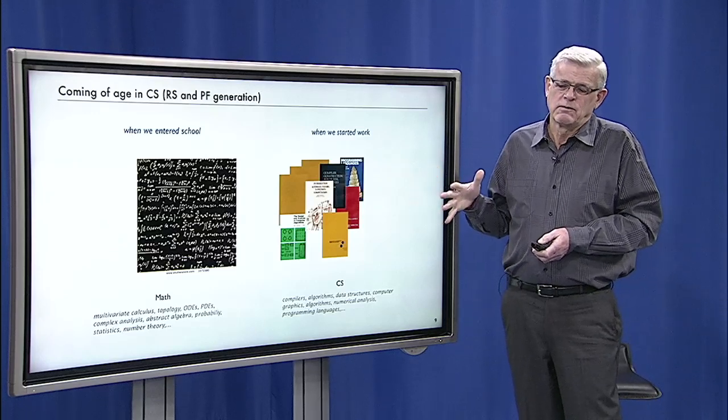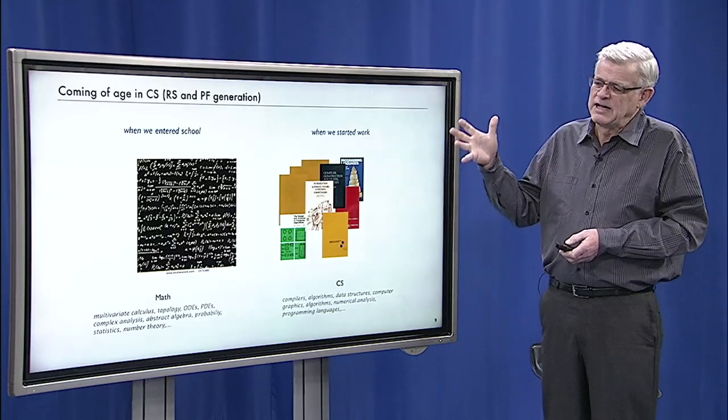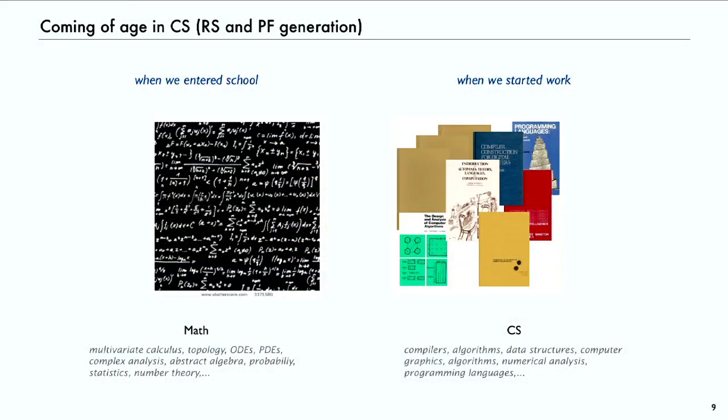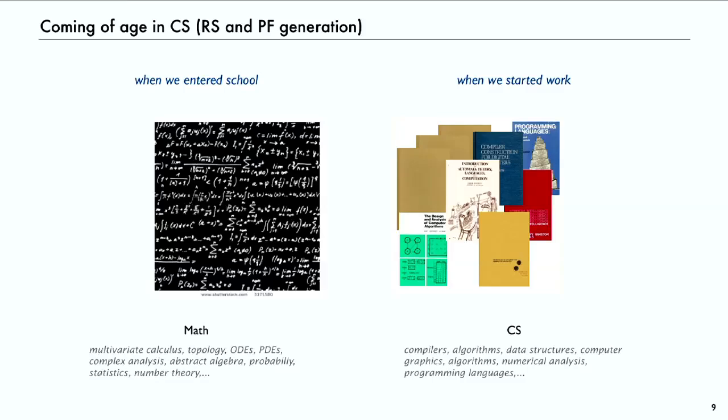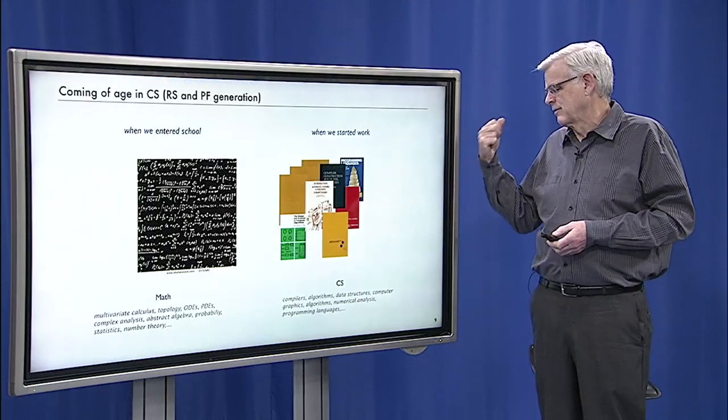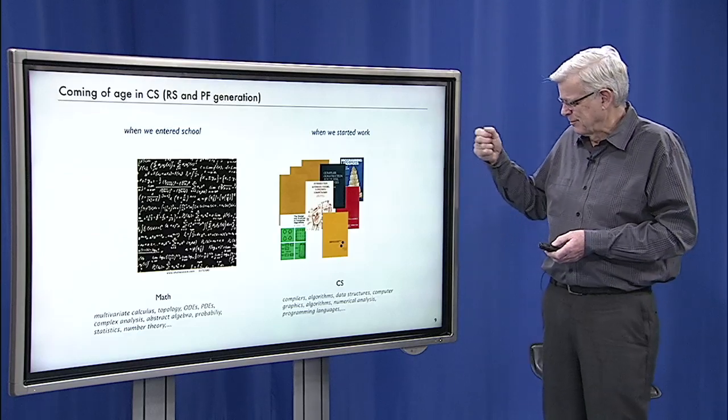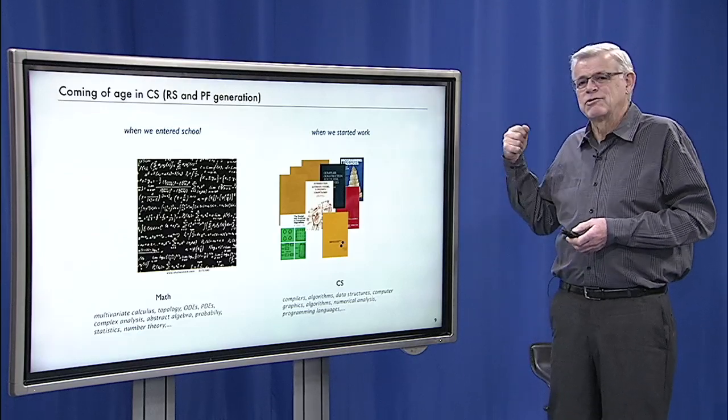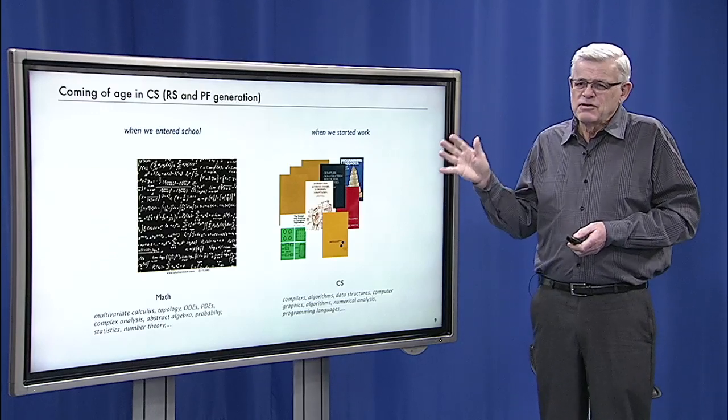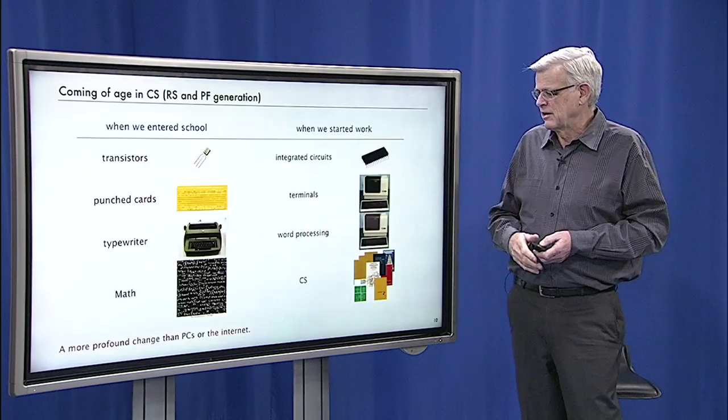And another important thing is that when we were in school and graduate school, the curriculum was about math. Everybody learned lots of math, learned PDEs and abstract algebra and probability and topology. But by the time we started research and teaching, there was computer science. And people had to learn about compilers and algorithms and data structures and graphics and operating systems, programming languages, numerical analysis, and all kinds of fields related to computer science. So these are huge differences in a relatively short amount of time.